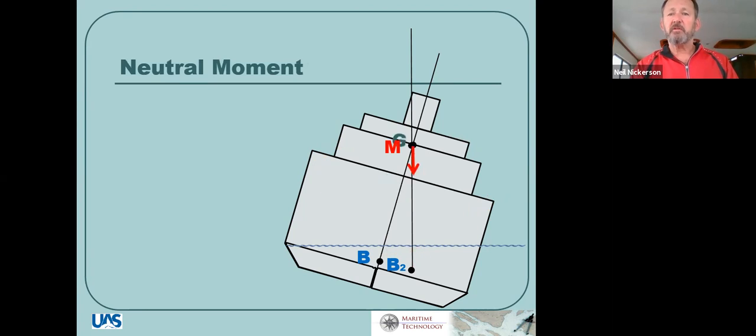However, if our center of gravity goes up to our metacenter, now we've reached a new equilibrium. It's pushing down, buoyancy is pushing up, and we have no force that's going to return our vessel back upright. It just stays where it is. We call this neutral stability or a neutral moment. No tendency to return us back to where we want it to be.